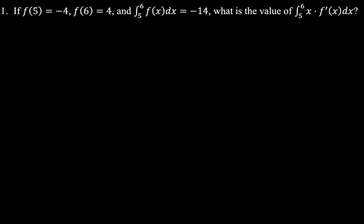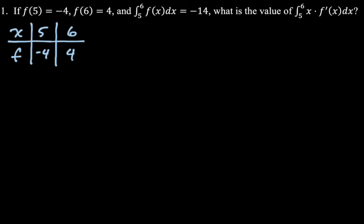So let's take a look. This first one doesn't actually have a table, but it gives you the idea. If f of 5 is negative 4, f of 6 is 4, and the integral from 5 to 6 of f of x dx is negative 14, the question is: what is the value of the integral from 5 to 6 of x times f prime of x dx? There's no table given, but there could have been. What we want to do is integration by parts and then evaluate correctly.